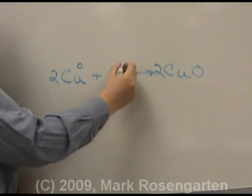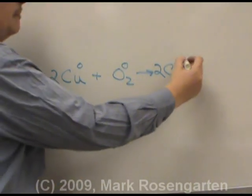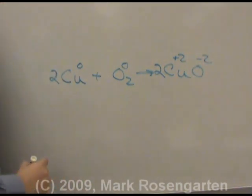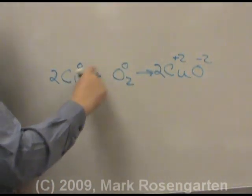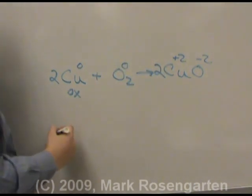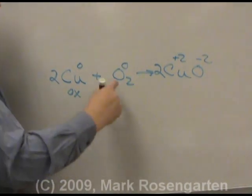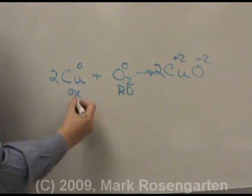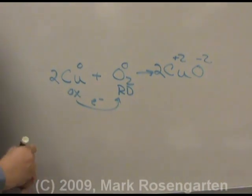Both copper and oxygen start off with no charge because they're not in compounds. In the compound, their charges are plus two and minus two. Because copper became more positive in charge, it lost two electrons — that's oxidation. Because the oxygen went from zero charge to a minus two charge, it gained electrons — that's reduction. The copper gave up its valence electrons to the oxygen.